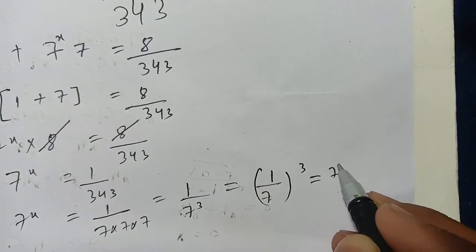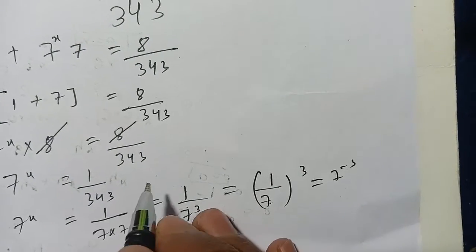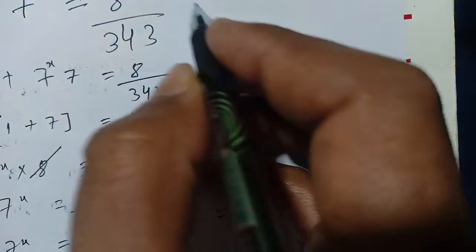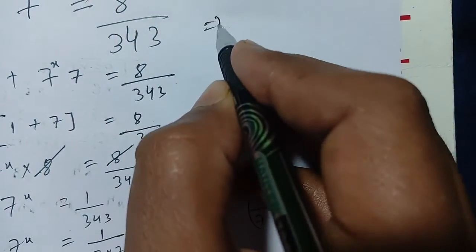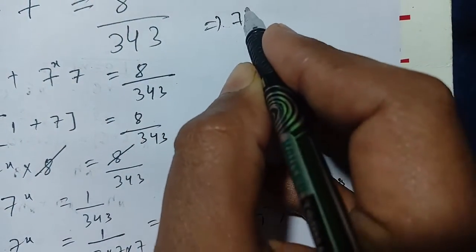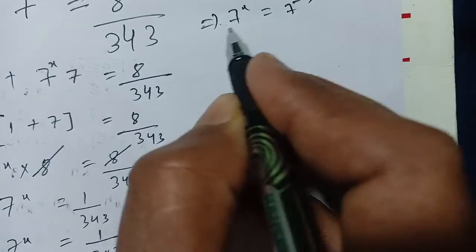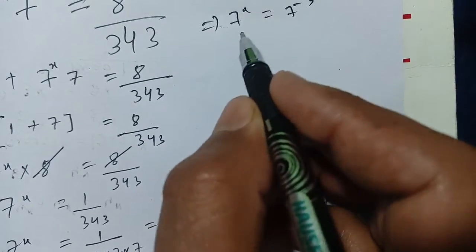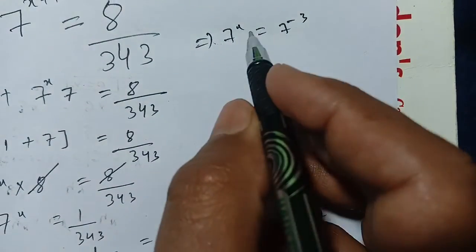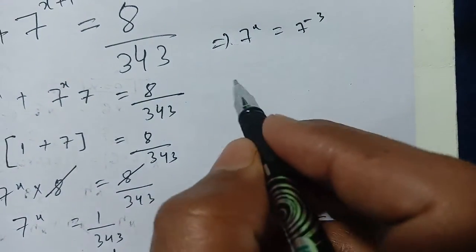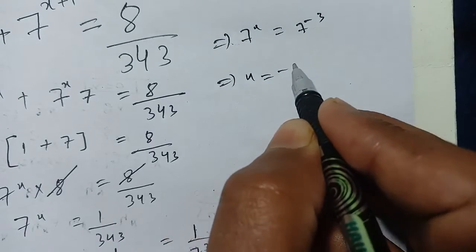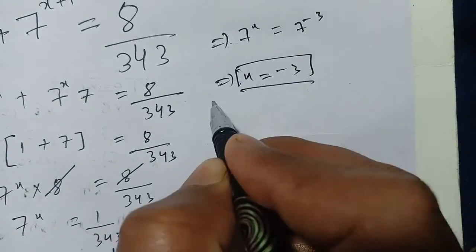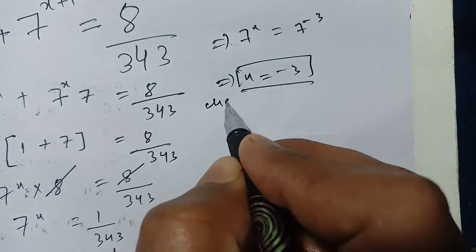When we shift 7 power 3 from the denominator to the numerator, it becomes 7 power minus 3. Now we have 7 power x is equal to 7 power minus 3. Since the bases are the same, we can compare the powers, giving us x is equal to minus 3.